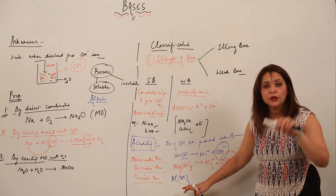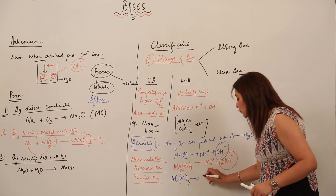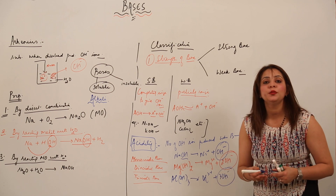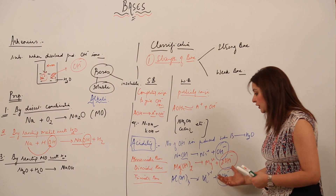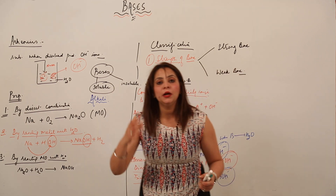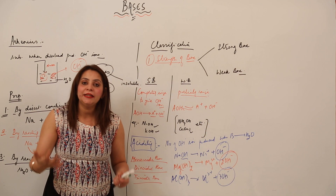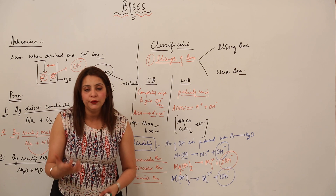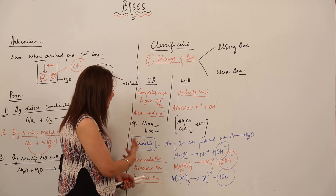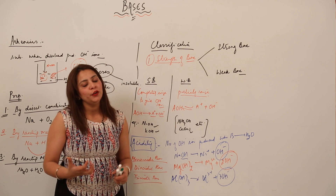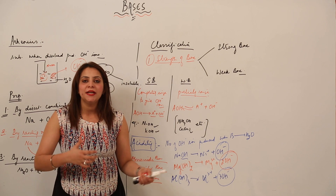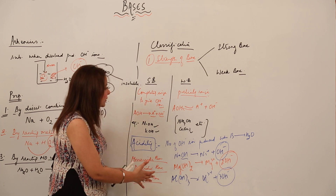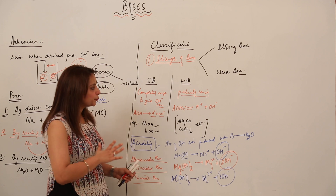For triacidic base, consider Al(OH)₃ — one molecule carries three hydroxide ions, so when it dissociates it forms three hydroxide ions — it is a triacidic base. Depending on the number of hydroxide ions contained and produced when dissolved in water, we classify the acidity of the base, calling it monoacidic, diacidic, triacidic, or polyacidic.